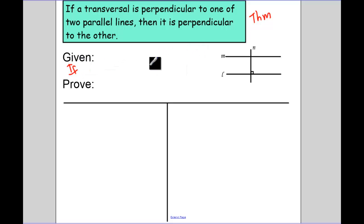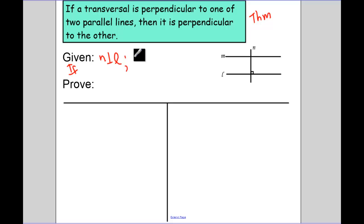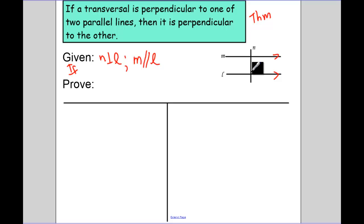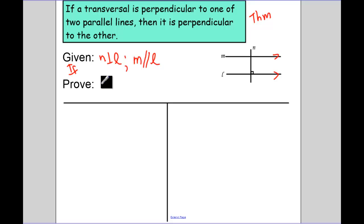The if part says a transversal is perpendicular to one of two parallel lines, so N is perpendicular to L. It's perpendicular to one of two parallel lines, which also tells me that M is parallel to L. The notation for parallel lines is a little arrow, and we have a little corner symbol indicating perpendicularity. I'm trying to prove that the transversal is perpendicular to the other line.